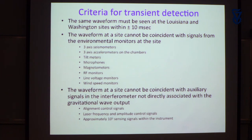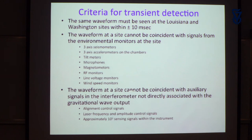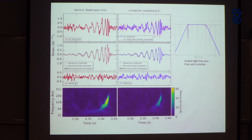The criteria for making a detection: whatever signal you see had to be the same at both the Livingston and the Hanford sites — that was the most important condition. There were also many environmental sensors: wind, magnetic fields, muons — and a tremendous number of internal instrument monitor signals. Any signal showing up in those would be rejected. This is the famous picture published in PRL when we announced the discovery a year ago in February.